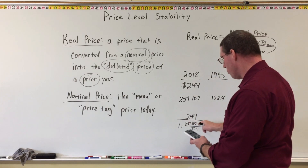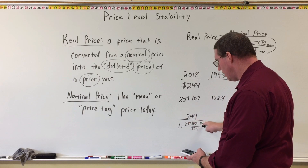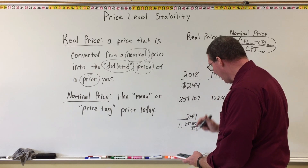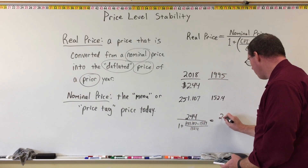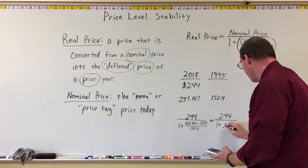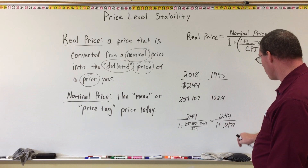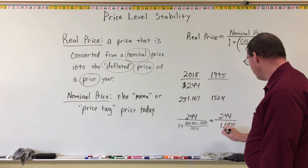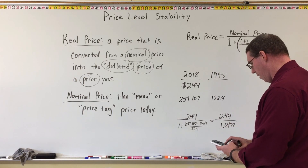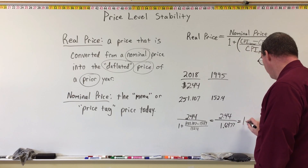I'll get my calculator. I'm going to do the numerator first: 251.107 minus 152.4 gives me 98.707, divided by 152.4, and I get 0.6477. So we have $2.44 divided by 1 plus 0.6477, which is just 1.6477. So all we have to do is 2.44 divided by 1.6477, and what I get is $1.48.